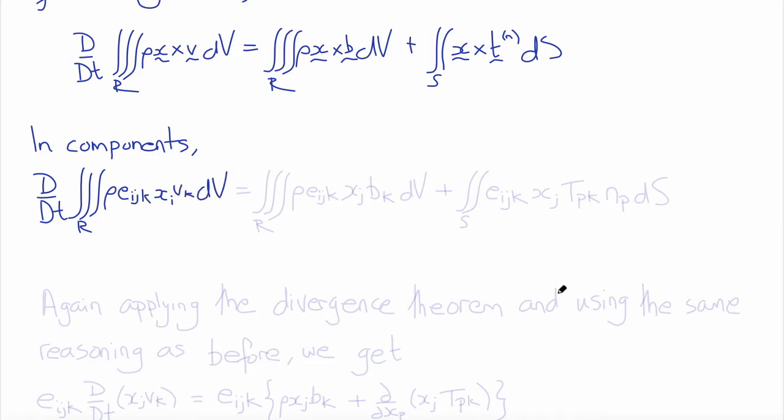we would have that material derivative of the volume integral Rho times EIJK, the permutation symbol, times X sub I, V sub K integrated with respect to V